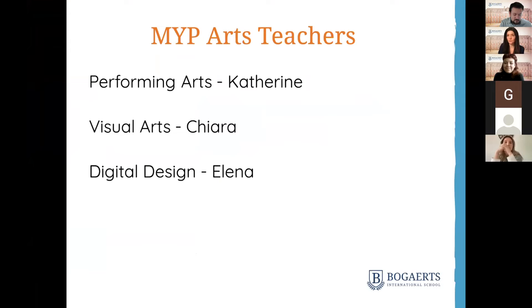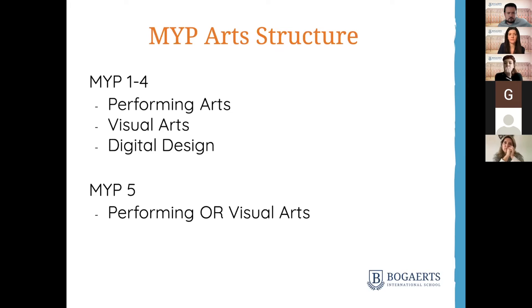The structure of the arts program is that MYP 1 to 4 take all three subjects once a week, and then in MYP5 they can choose between performing arts or visual arts. We do lots of combined arts projects, including exhibition days, concerts, theatre performances, and this year for the first time we're having a musical.